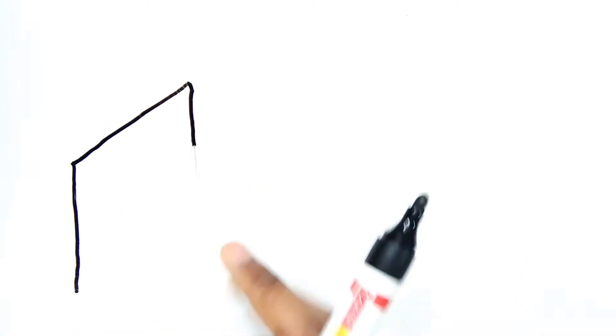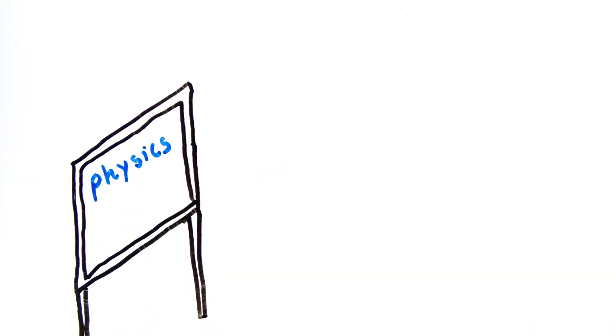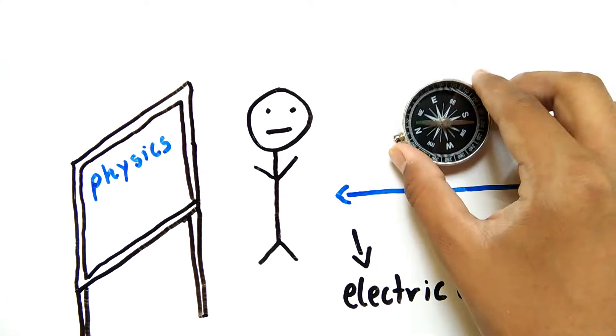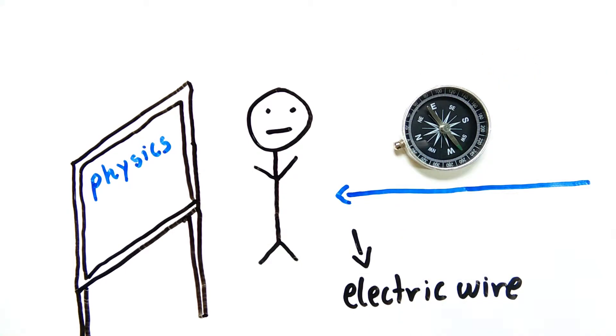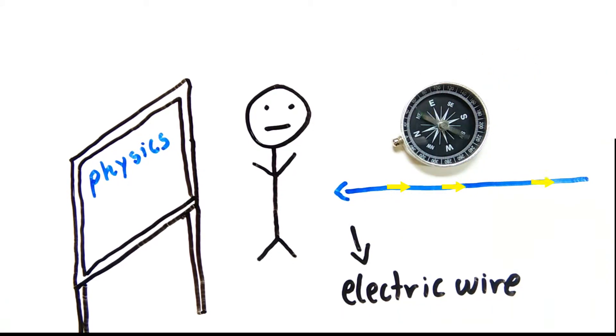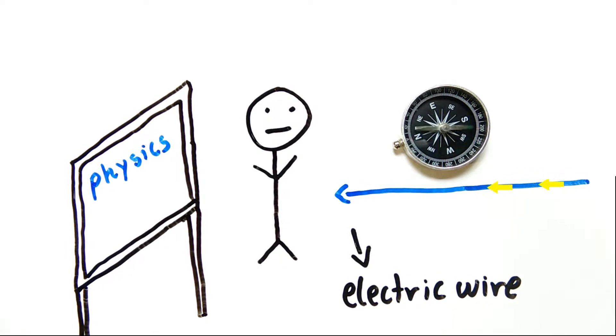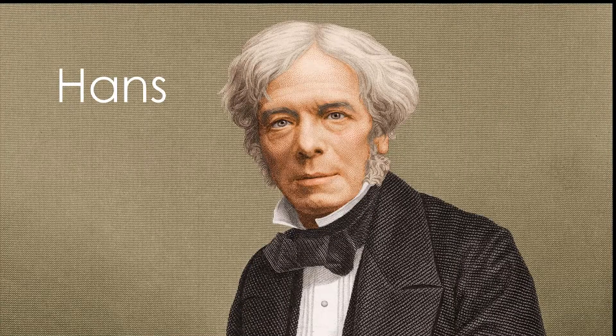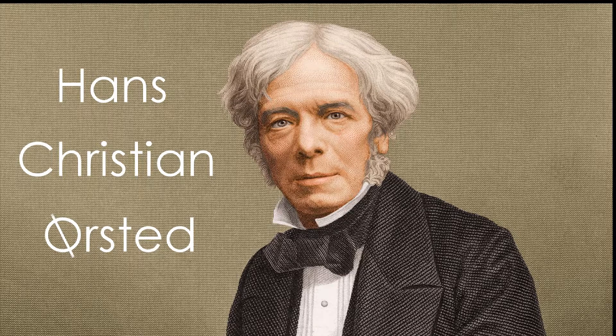In April of 1820, a physics professor at Denmark was working in his lab. He had a compass laying around near an electric wire. He noticed that the needle in the compass started to move when he passed electric current through the wire, and the needle moved in the opposite direction when he changed the direction of the electric current. The professor was Hans Christian Orsted, and he also discovered the element aluminum.